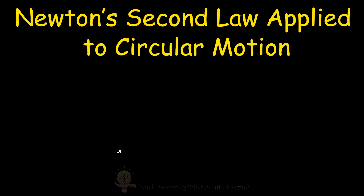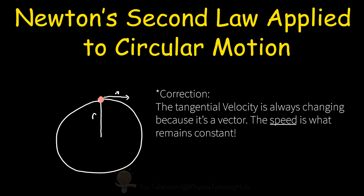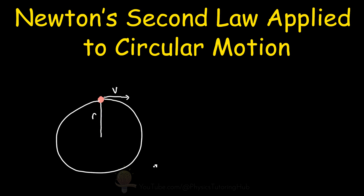So what is uniform circular motion? If we have a particle, for example a ball, and we've attached it to a string of length r, and we swing this ball around in a circle at a constant velocity — so the tangential velocity of the ball doesn't change over time — then this ball is undergoing uniform circular motion.